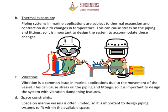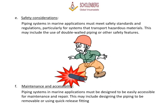C. Vibration is a common issue in marine applications due to the movement of the vessel, causing stress on piping and fittings, so it is important to design the system with vibration dampening features. D. Space constraints — space on marine vessels is often limited, so piping systems must fit within the available space. E. Safety considerations — piping systems must meet safety standards and regulations, particularly for systems that transport hazardous materials, which may include the use of double-walled piping. F. Maintenance and Accessibility — piping systems must be designed to be easily accessible for maintenance and repair, including designing piping to be removable or using quick-release fittings.